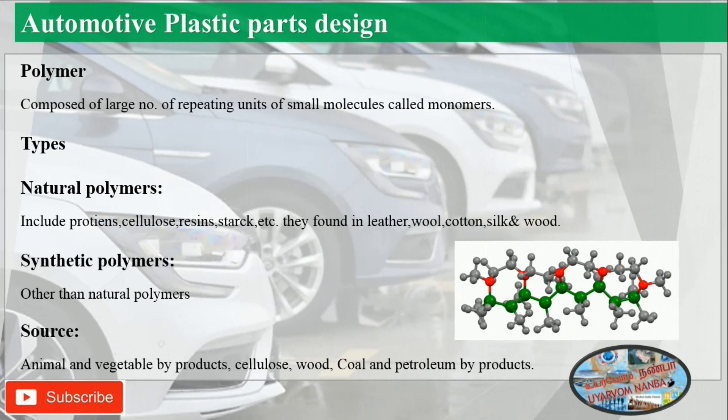Polymers are composed of a large number of repeating units of small molecules called monomers. Two types of polymers are available. The first one is natural polymers, which include proteins, cellulose, resins, and starch. They are found in leather, wool, cotton, silk, and wood.